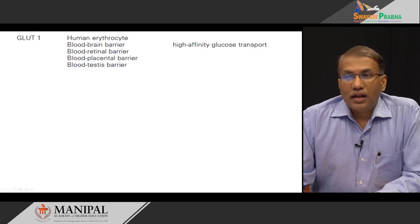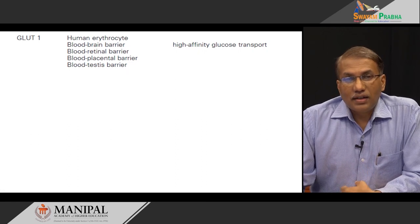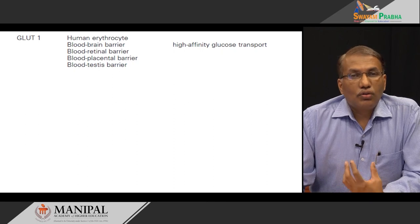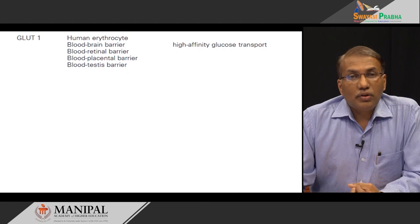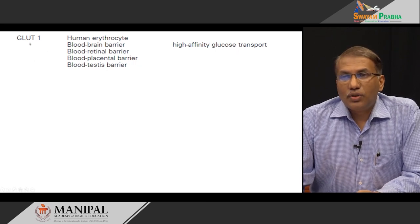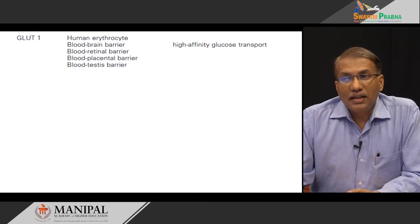Imagine that GLUT1 was not there and only GLUT2 was at the placental site — by the time glucose from the intestine reaches the placenta, the mother might have used most of the glucose for her own use. The glucose concentration on the maternal side at the placental level would have been very low and no glucose would have been transported into the fetal system. Just because GLUT1 is there, even if the glucose level at the placental barrier site is very low, it can still push some amount of glucose to the fetal side.